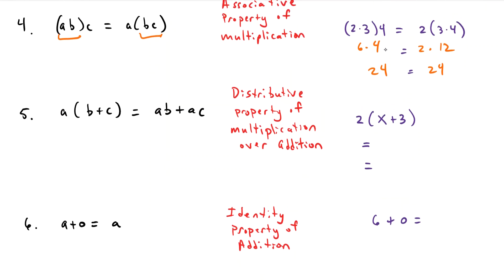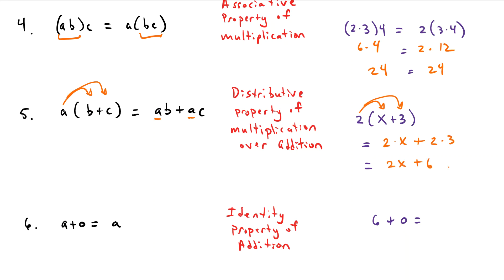We have the distributive property — the distributive property of multiplication over addition. You can just remember it as distribution. We distribute the A to each of the B and the C. So if we distribute 2 to the x and the 3, we get 2 times x plus 2 times 3, which gives us 2x plus 6.